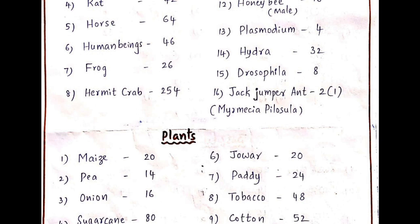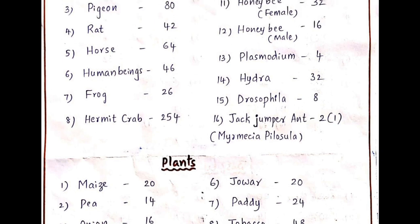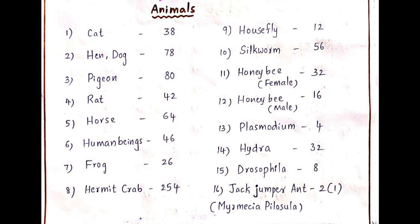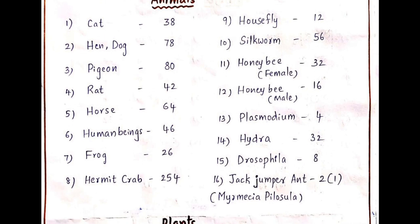This is a very important bit. Hermit crab is the animal having the highest number of chromosomes — 254 chromosomes. Housefly has 12 chromosomes. Silkworm has 56 chromosomes.